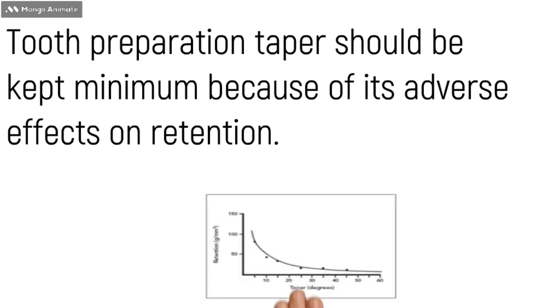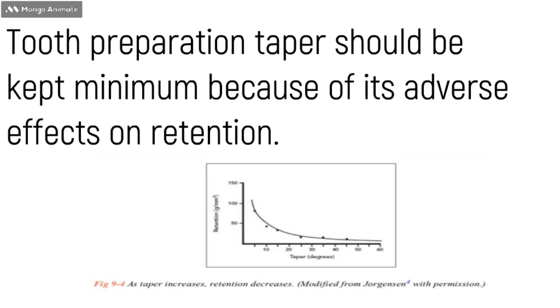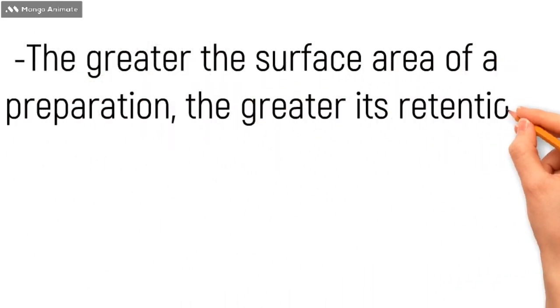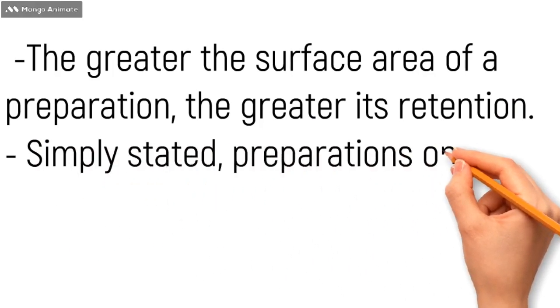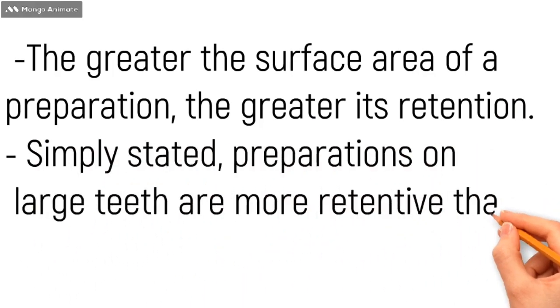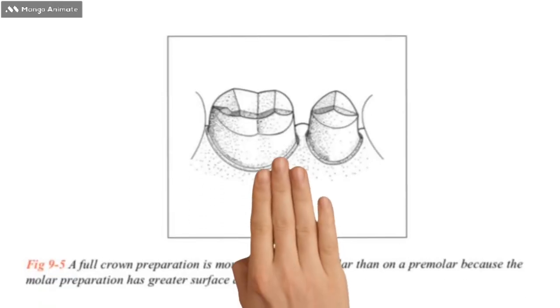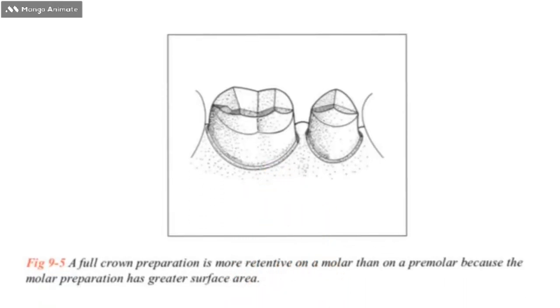Tapering must be kept minimum because of its adverse effects on retention. Here in this graph you can see as the taper is increasing, the retention decreases, which is depicted by the falling line of the graph. Also, the greater the surface area, more will be the retention. In simple words, preparation on large teeth are more retentive, as you can see in this figure which simply says that a full preparation crown is more retentive on a molar as compared to a premolar because of the greater surface area of the molar.